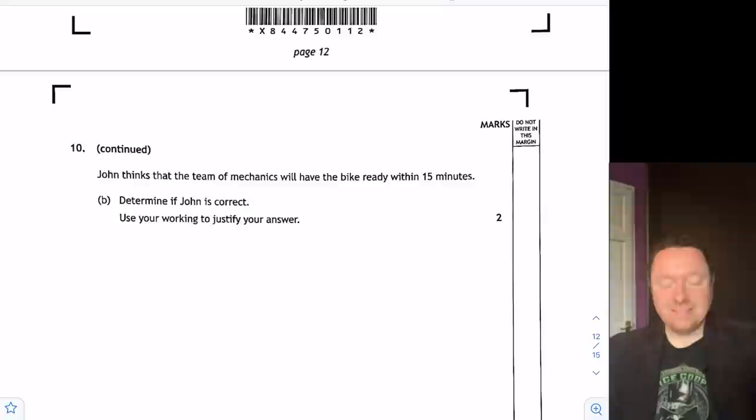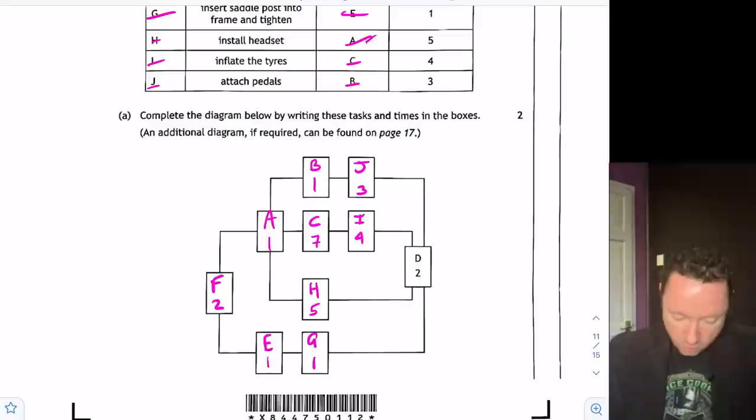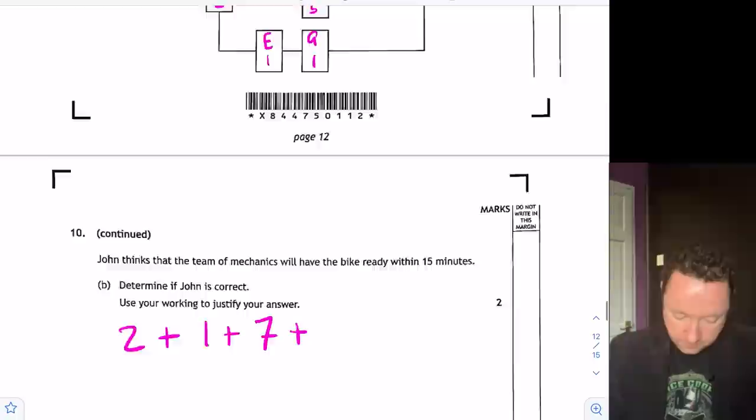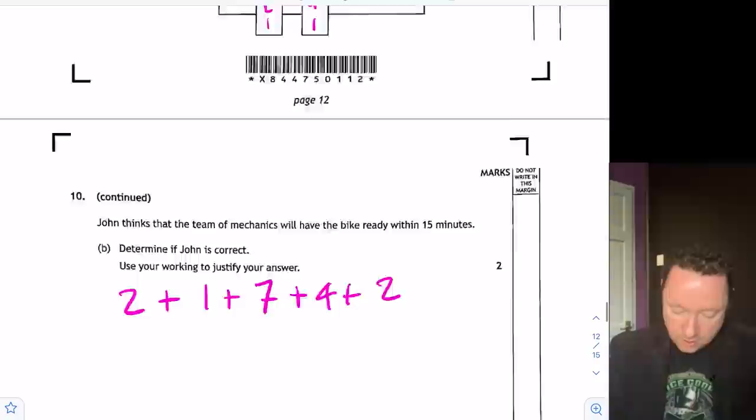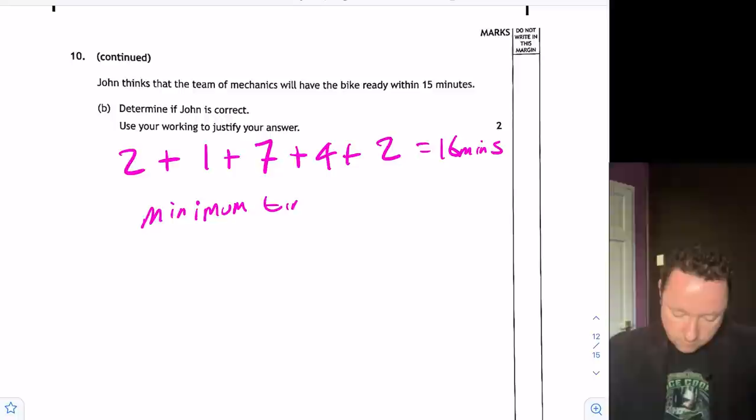John thinks the mechanics will take longer than 15 minutes. Is he correct? Well, how you do these precedence tables is you start at the start. So I've got two minutes. And then it's the longest of these two, which is one minute. So add one minute. And then when I move on, I need to wait until the longest of these is finished. So that's seven minutes. And then it's the longest of these two, that's four minutes. And then it's two minutes at the end. So that's the critical path we call that. Seven plus three is ten, two plus three is one, plus seven is ten, plus four is 14, plus two is 16 minutes is the minimum time. 16, John is wrong, since 16 is bigger than 15.